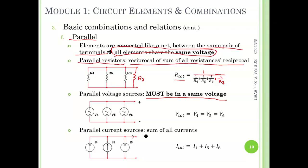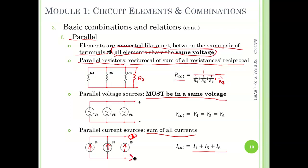Last is the parallel current source. You can connect different current sources in parallel — that's fine. The total current is equal to the sum of all of them, but you still need to be careful with the current direction. If you define your total current direction one way, it equals i4 plus i5 plus i6 when their directions are consistent. If the direction is opposite, you need a negative sign in front. If i5 has an opposite current direction, we need a negative sign in front of i5 itself.